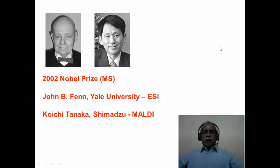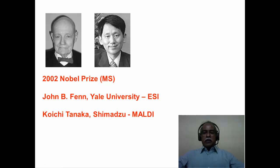John Fenn and Koichi Tanaka were the discoverers of electrospray ionization mass spectrometry and MALDI mass spectrometry. John Fenn from Yale University and Koichi Tanaka from Shimadzu company were the inventors of these modern techniques. They were awarded the Nobel Prize because these two techniques are very powerful for the identification of large macromolecular systems with molecular weights of the order of hundreds of thousands.